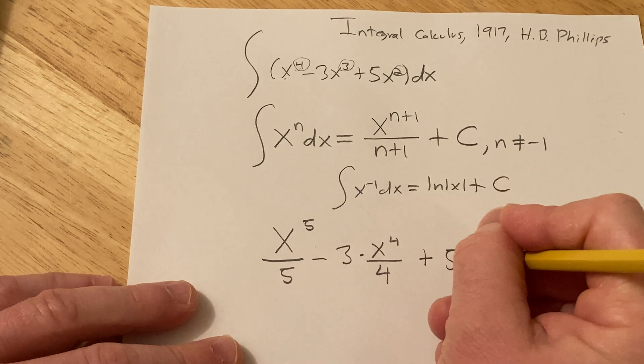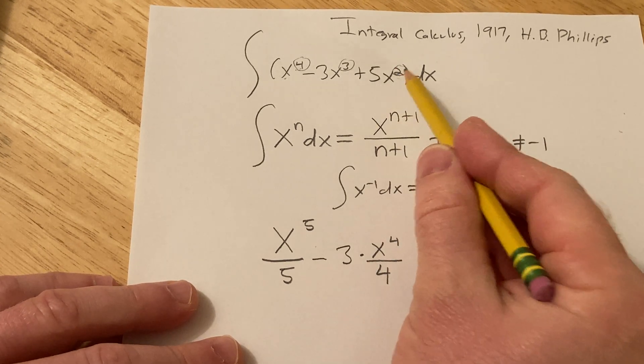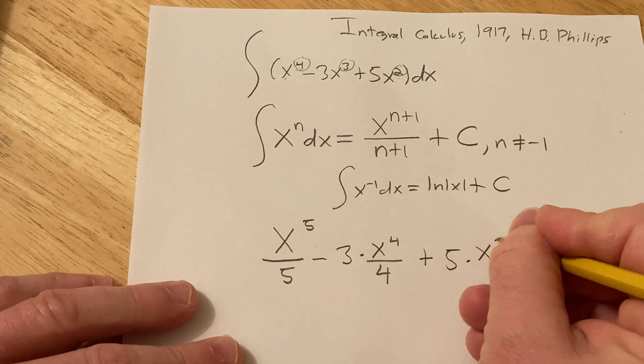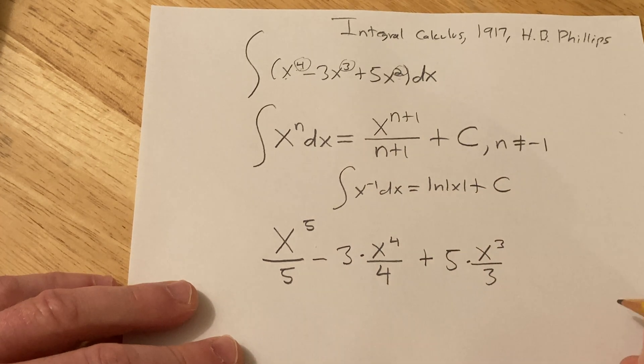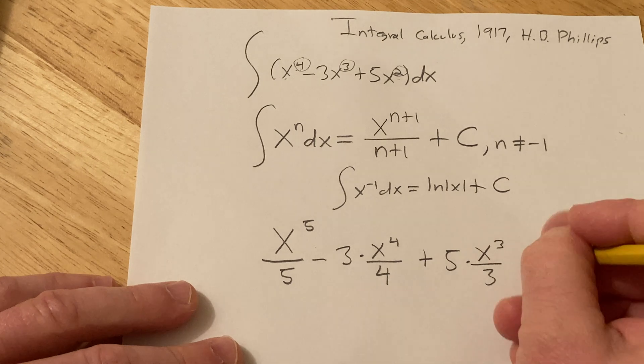Plus 5 times, this one is x squared, so it's x cubed over 3, and you're just missing the c.